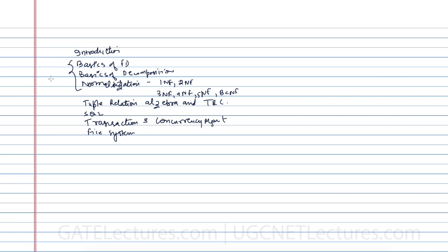This part — functional dependency and normalization — is just one single chapter. We still need to cover four more chapters: chapter two, chapter three, chapter four, five, and six.